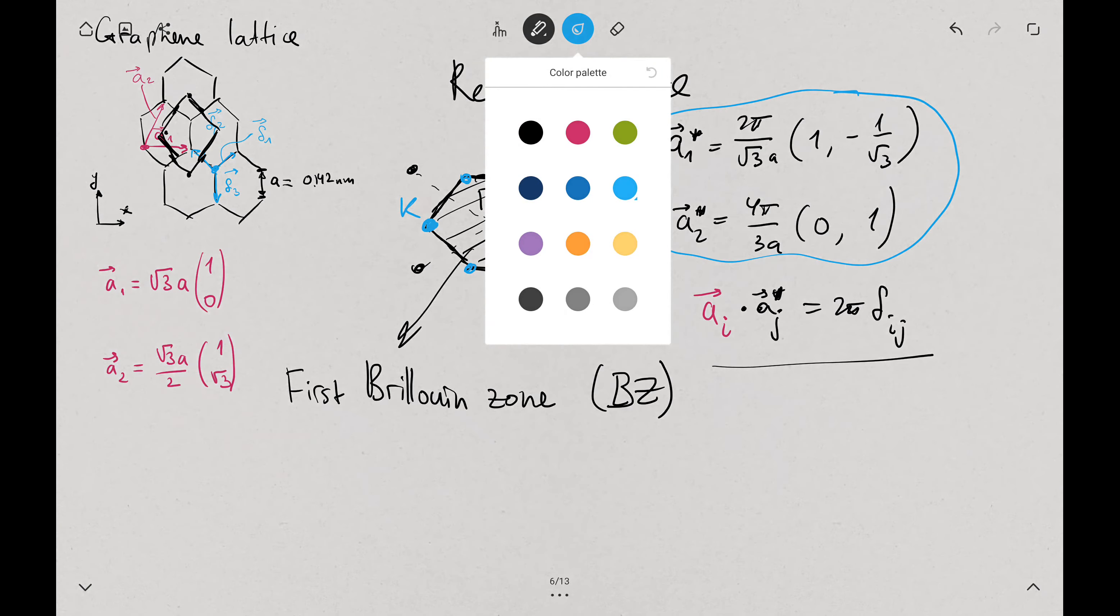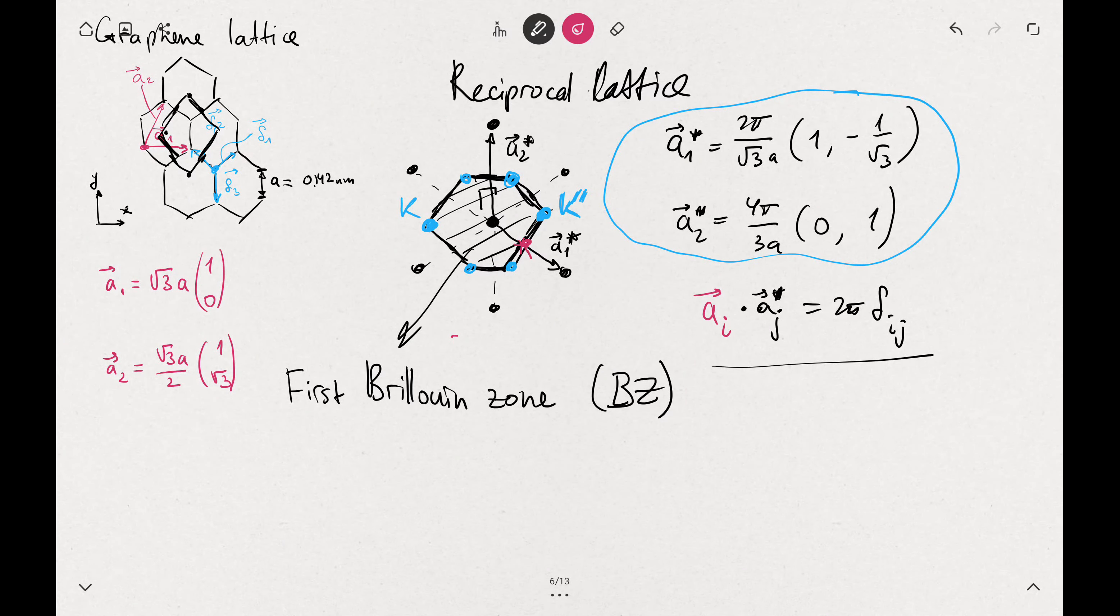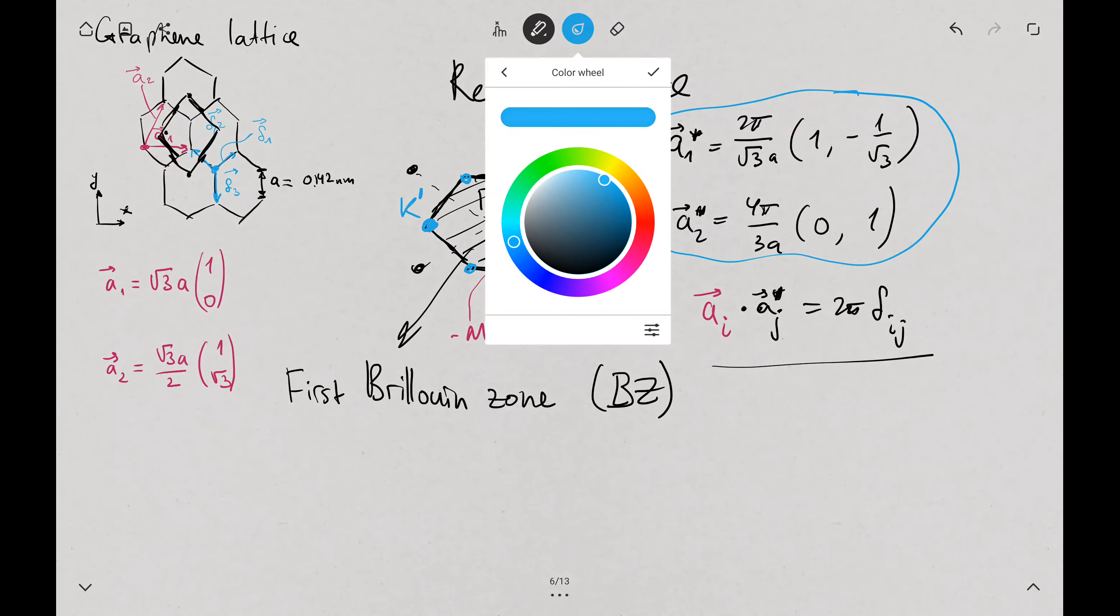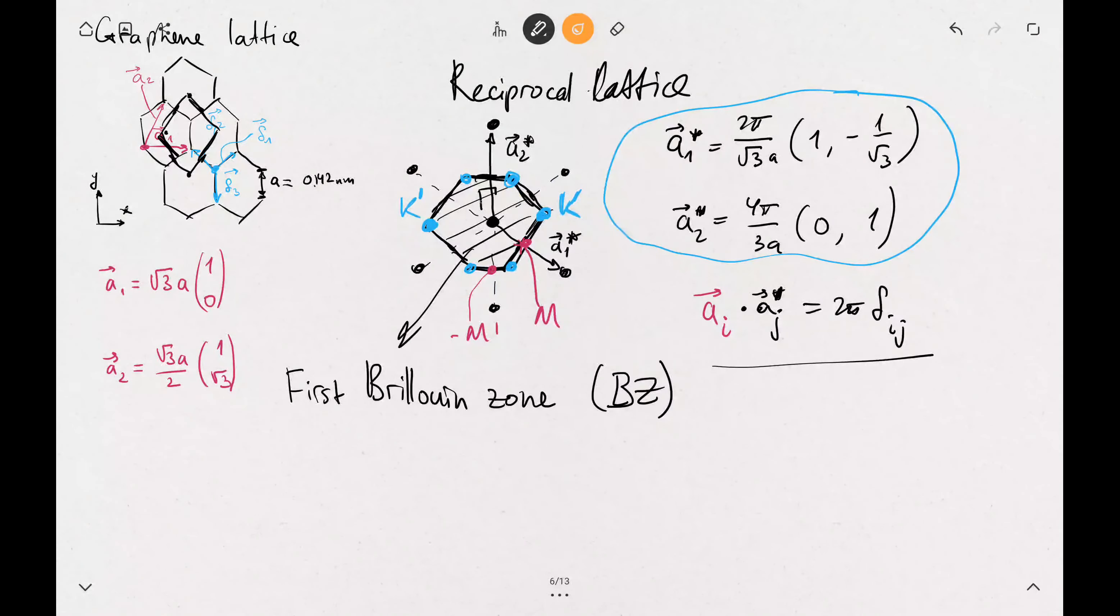Those points in the middle between the corners are called M points, and you can have them also M and M prime. And we have a gamma point in the middle. So we have M points, K points, and the gamma point. Those are points where the reciprocal vectors have some interesting properties there.